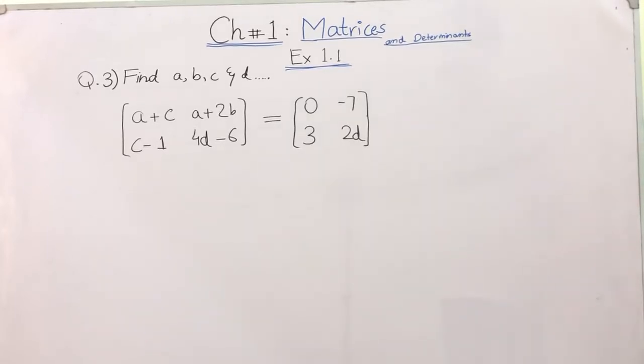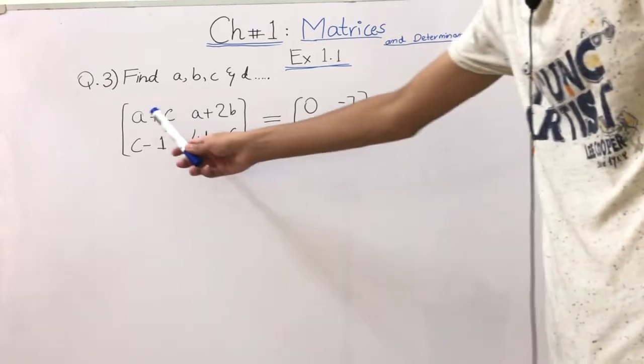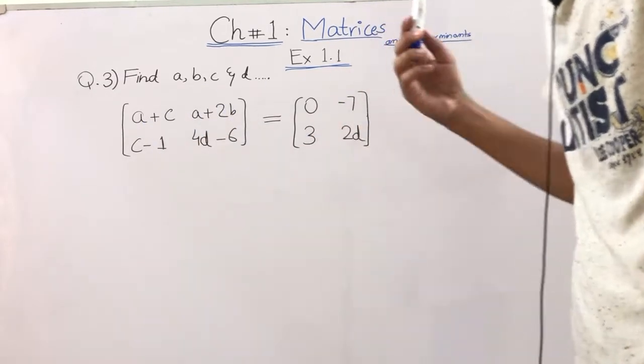Bismillahirrahmanirrahim. Now we will do question number 3, Exercise 1.1, Chapter 1, Matrices and Determinants. This is Math Class 9 and Punjab Textbook Board. This is question number 3: Find the values of A, B, C, and D which satisfy the matrix equation. This is our equation given. We have to find A, B, C, and D values.